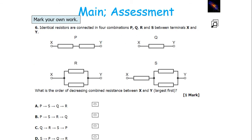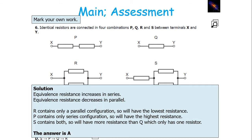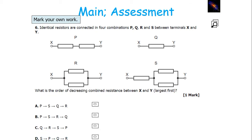In this next question, there are two types of configuration: parallel and series. The equivalent resistance in series will increase, but in parallel the equivalent resistance will decrease. R only contains a parallel configuration, so it will have the lowest resistance. P only contains a series configuration, so it will have the highest resistance. S will contain both, so it will have a higher resistance than Q, which only has one resistor. The answer is A: P has the highest resistance, R has the lowest, and S has a higher resistance than Q.